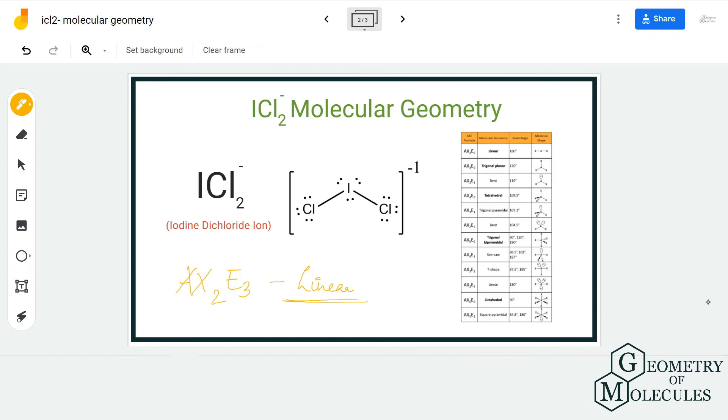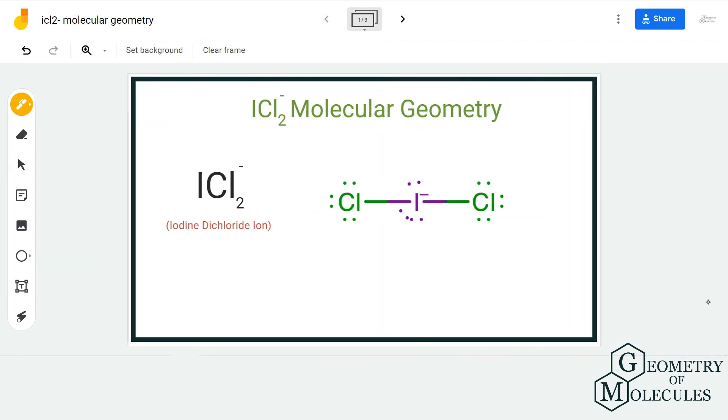And if you refer to this table, you can see the molecules that have AX2E3 formula are linear and they have 180 degrees of bond angles, which is evident for ICl2- ion as well. Hence the molecular geometry for ICl2- is linear.